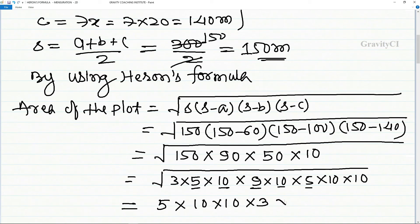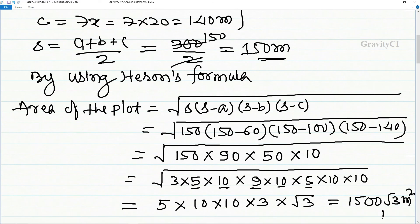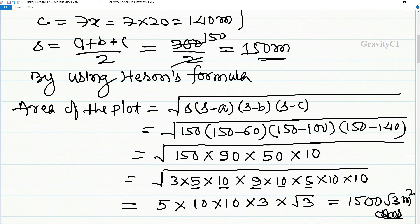This equals 5 times 10 times 10 times 3 times the square root of 3, which is 1500 root 3 meter square. The answer is 1500 square root 3 square meters.